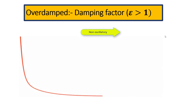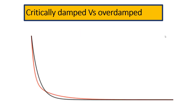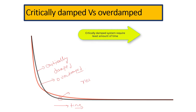For the critically damped system, the response is similar to the overdamped system. But comparing the two, the black line represents the critically damped system and the red line represents the overdamped system. Looking at the time axis, the critically damped system reaches zero faster compared to the overdamped system. So, a critically damped system always takes less time to reach the equilibrium position than an overdamped system.